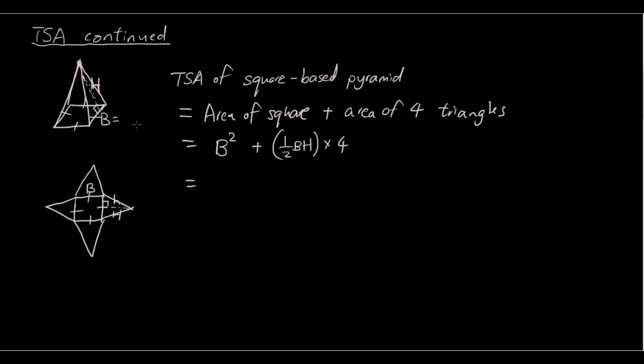Let's assign some values to these lengths. Let's say the base is three centimeters and the height is six centimeters. So then it'll just be three squared plus half times three times six times four. Put all of that in the calculator, which equals 45 centimeters squared. So that is the square base pyramid.